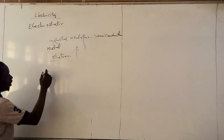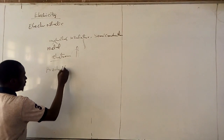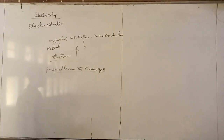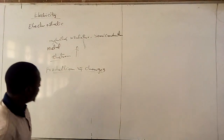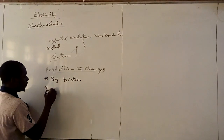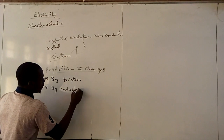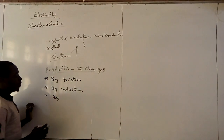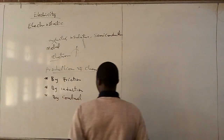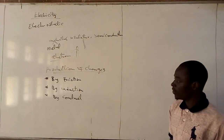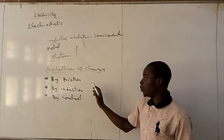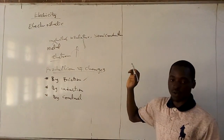We are going to talk about the production of charges. There are three ways in which we can produce charges: by friction, by induction, and by contact. We talked about rubbing of fur, rubbing a rod with silk, and combing of hair. If we are rubbing any two bodies against each other, then we are producing electric charge by friction.